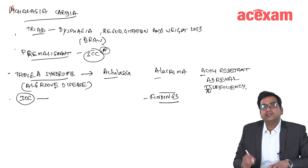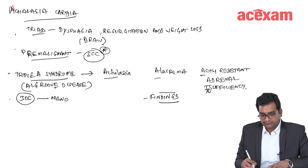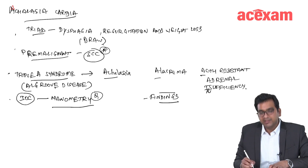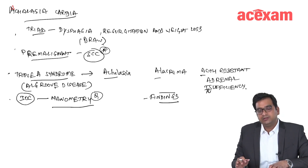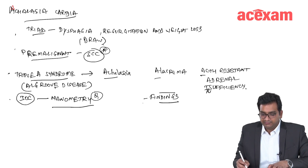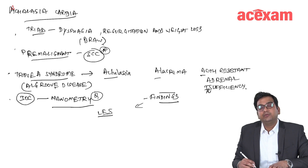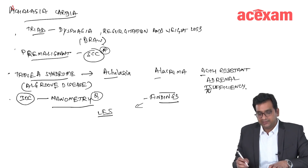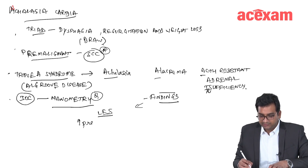The investigation of choice for achalasia cardia is manometry. Manometry is the investigation of choice for all motility disorders. The findings on the LES show increased pressure of the lower esophageal sphincter and absence of relaxation.